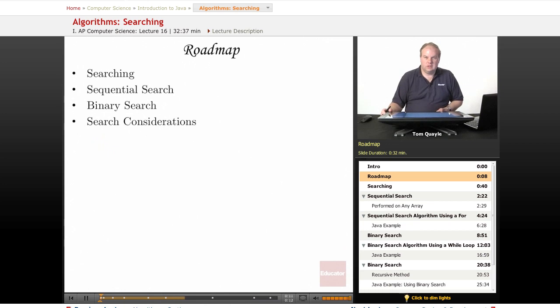We'll first talk about searching and some general considerations about searching and how we implement searching. Then we'll look at two specific methods of searching: sequential search and binary search. We'll talk about the pros and cons of each, and then finally we'll conclude with some specific trade-offs and considerations to take into account when you're considering implementing a search algorithm.